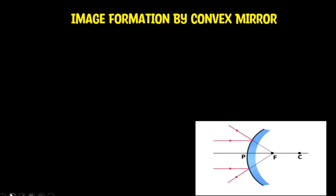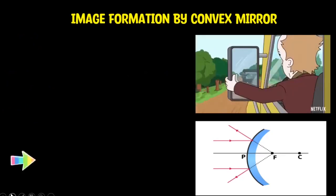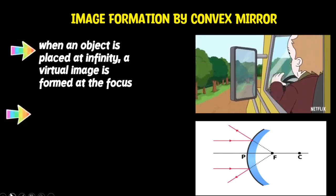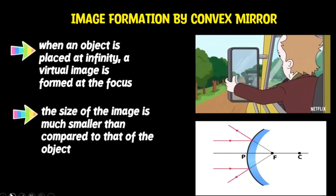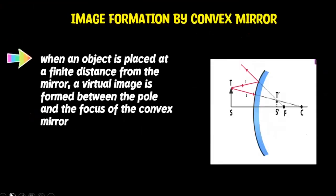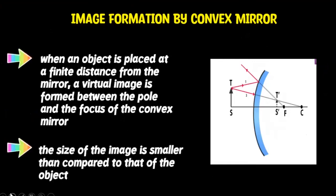Now, here is the image formation by convex mirror. When an object is placed at infinity, a virtual image is formed at the focus, and the size of the image is much smaller than compared to that of the object. When an object is placed at a finite distance from the mirror, a virtual image is formed between the pole and the focus of the convex mirror, and the size of the image is smaller than compared to that of the object.